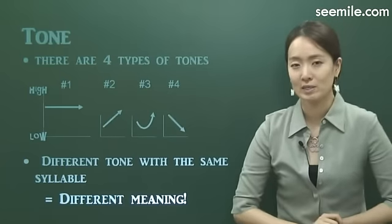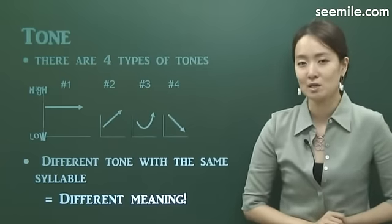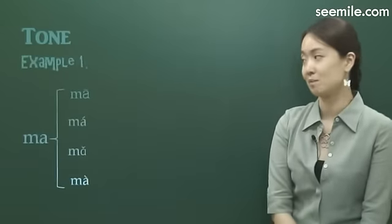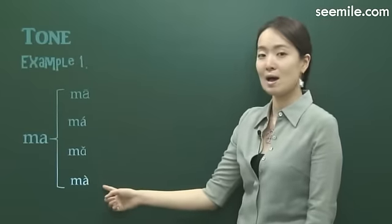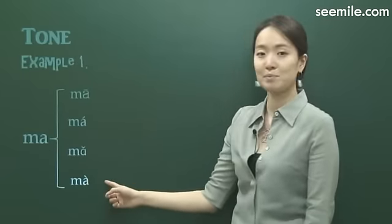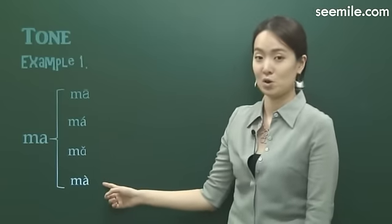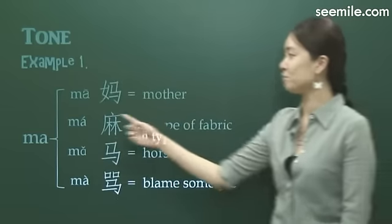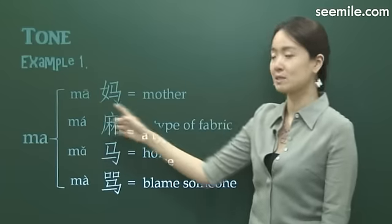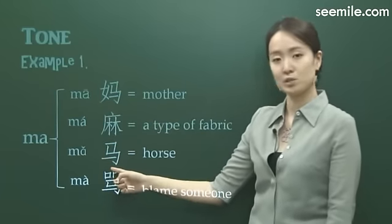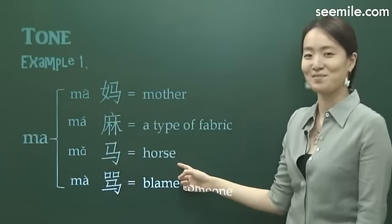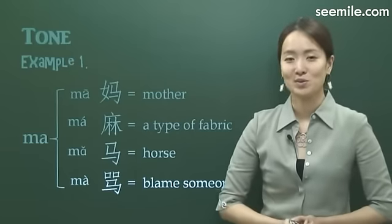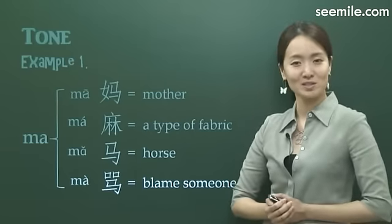Tone is one of the most tricky parts of learning Chinese, because the same syllable with a different tone can have a completely different meaning. For example, these four characters all share the pinyin 'ma,' but with different tones they have different meanings. 'Mā' with the first tone means 'mom,' whereas 'mǎ' with the third tone means 'horse.' Isn't that funny? Once you get used to the tones, you'll see that this is actually the beautiful part of Chinese — because speaking Chinese can be like singing a song.